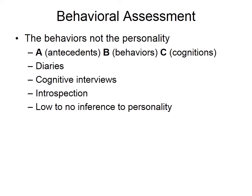We can also use behavioral assessment to infer personality. Rather than measuring personality directly, we go more directly for the actual behaviors themselves. When we measure conscientiousness, for example, we assume that more conscientious people will behave in more conscientious ways. Behavioral assessment looks at the antecedents of behavior, the behaviors themselves, and the cognitions behind them — the ABCs of behavior — often involving cognitive interviewing, personal introspection, and diaries, going directly for behaviors without necessarily inferring back to a personality construct.